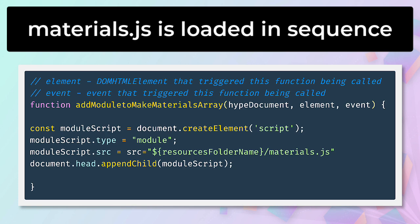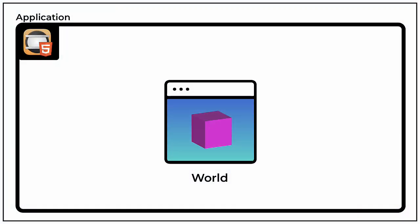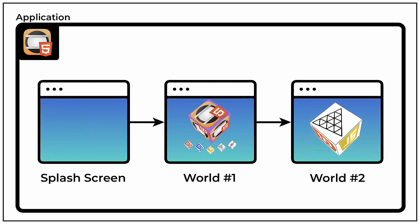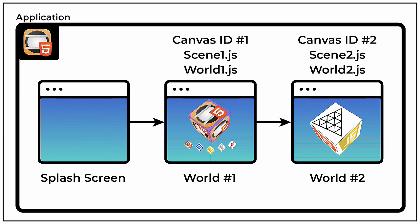In our original sample code, where we had a single 3JS world residing in a Hype container element that was part of a single scene, we used generic names for the modules in our code. For example, we had a main.js file that coordinated an identifier for the canvas element provided by Hype with the world.js file containing our 3D world. This was fine for our initial use case, but now we have multiple worlds in separate containers that reside in different scenes. So in this project, I've made three changes: I've added a number to each canvas element ID; I've replaced main.js with a numbered Scene.js file; and the corresponding World.js file has also been annotated with a number that matches the scene in which it resides. Finally, I've capitalized the names of these last two modules to better distinguish them from our reusable 3JS modules.